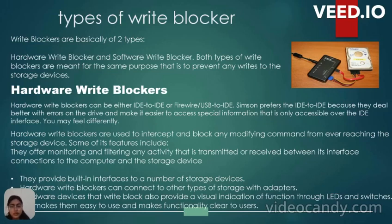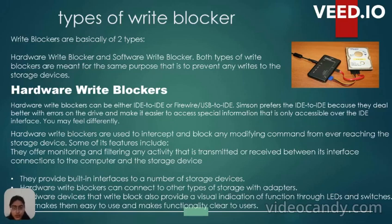The first type is Hardware Write Blockers. Hardware Write Blockers can be either IDE to IDE or USB to IDE. Forensic investigators prefer IDE to IDE because they deal better with errors on the drive and make it easier to access special information that is only accessible over the IDE interface. Hardware Write Blockers are used to intercept and block any modifying commands from ever reaching the storage device.